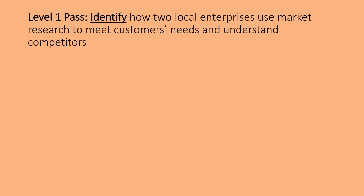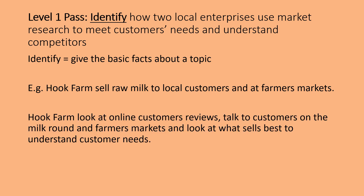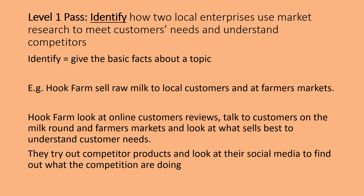For the level one pass, we are identifying. What 'identify' means is you need to give the basic facts about a topic. We're going to use Hook Farm as an example — they are a farm which sells raw milk to local customers at farmers markets. So we're trying to identify how Hook Farm uses market research to meet customers' needs and understand competitors. Here's a small example: Hook Farm looks at online customer reviews, talks to customers on the milk round at farmers markets, and looks at what sells best to understand customers' needs. Short, to the point, pretty basic, but you have talked about the topic — that would be a level one pass.